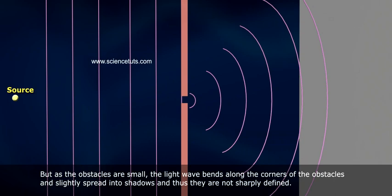as the obstacles are small, the light wave bends along the corners of the obstacles and slightly spreads into shadows, and thus they are not sharply defined.